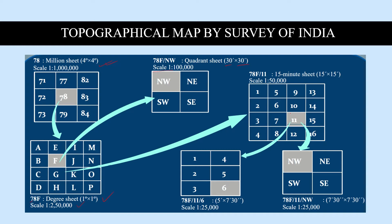For the 16-part division, the topo sheet number for block 11 would be written as 78F/11, and for block 9 it would be 78F/9.